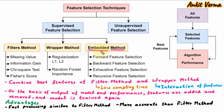In the embedded method we have various techniques: forward feature selection, backward feature selection, exhaustive feature selection, and recursive feature selection. So these are all the feature selection techniques. That's all for today, thank you.